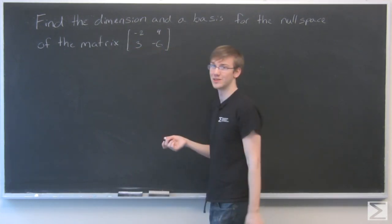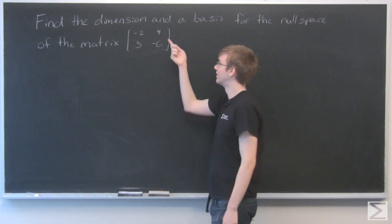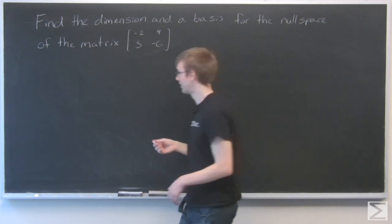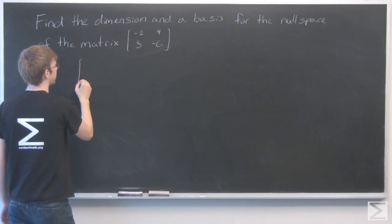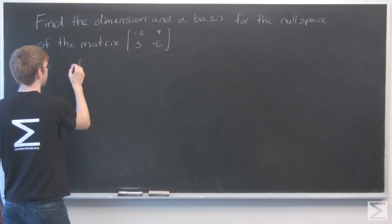This happens to be a really easy matrix. Just looking at it, I can tell that these are both multiples of each other. But I'm going to simplify it out for you so you can see it. I'm going to multiply the first row by minus 1/2.